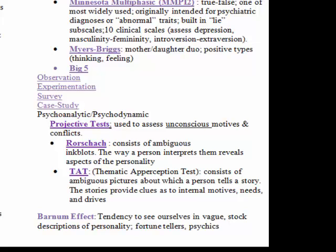The TAT is where you're given an ambiguous picture and have to create a story about it; the story should give clues as to what's going on in your unconscious. There are a lot of criticisms of projective tests — there's pretty weak reliability and validity, since one therapist could interpret your story one way and a different therapist could interpret it another way. One final term to be aware of is the Barnum effect — the tendency to see ourselves in vague, stock descriptions of personality. That's why things like horoscopes are so widely accepted by people today.